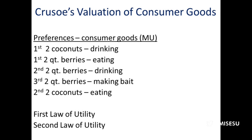We have the principle of diminishing marginal utility — the first law of utility. The second two coconuts would be worth less to Caruso than the first two. On this preference scale we also have berries, with a unit of two quarts — that's how much he wants to eat. For the second two-quart unit he would make berry juice, and for the third he would make bait and try to catch small game. We see the first law of utility — diminishing marginal utility — applying to both berries and coconuts and any good a person uses.